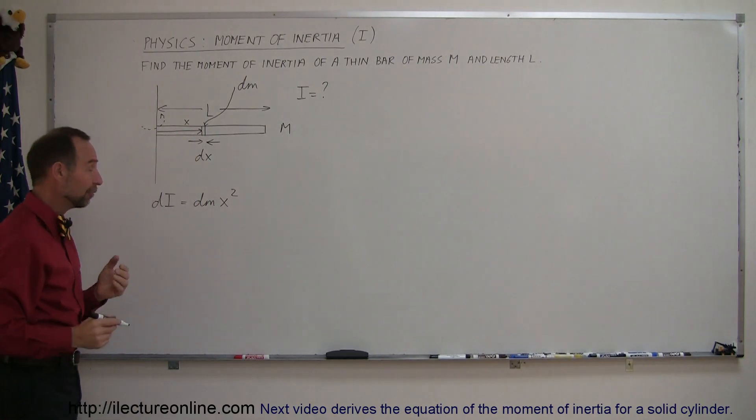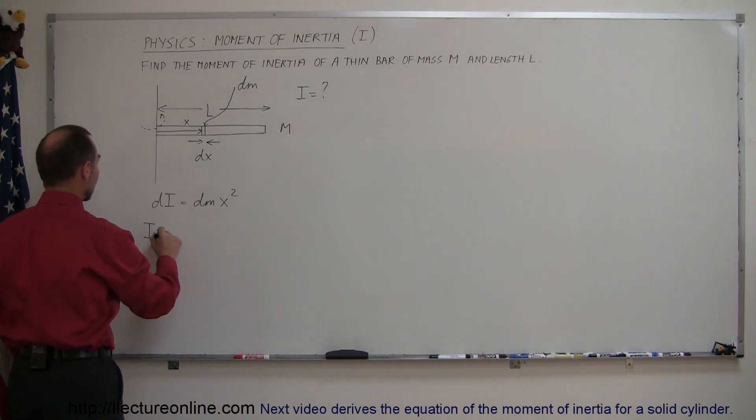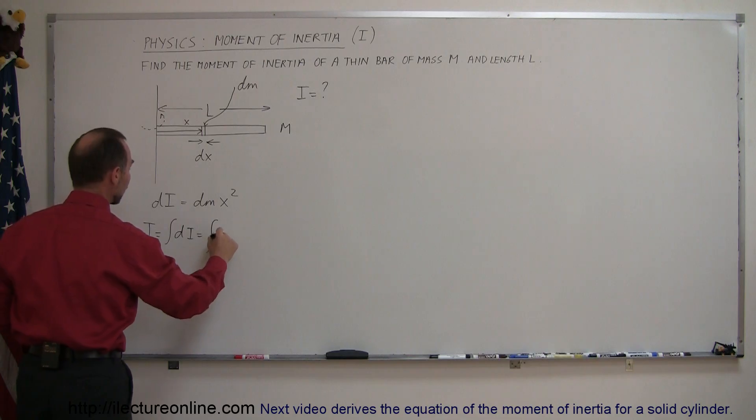And therefore, if I want to find the total moment of inertia i, it's simply equal to the integral of all the little di's, which is equal to the integral of all the little dm's times x squared.